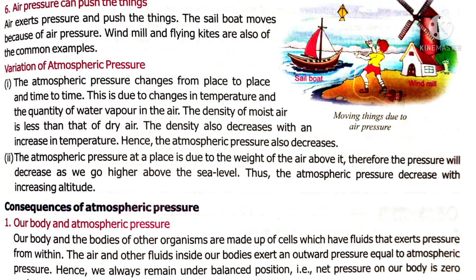Air pressure changes from place to place and time to time due to change in temperature and quantity of water vapor in the air — that means humidity and temperature. These two factors change atmospheric pressure. The density of moist air is less than dry air. Moist air means water vapor content in the air; the weight of water vapor is less than nitrogen and carbon dioxide, so density of moist air is considered lesser than dry air. Density also decreases with increase in temperature because when temperature increases, gas particles expand and density per unit area decreases.